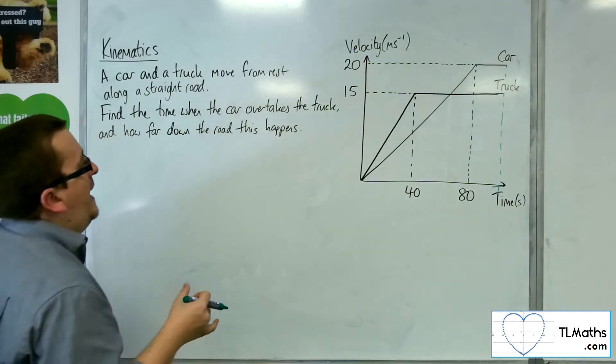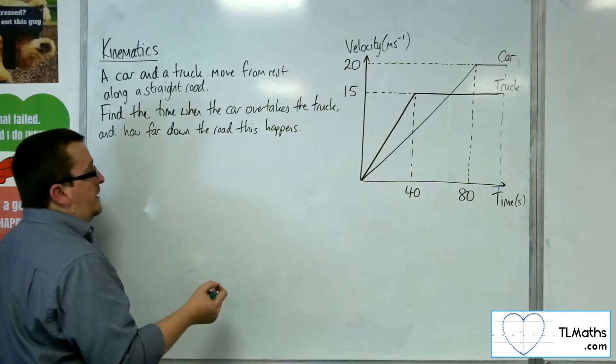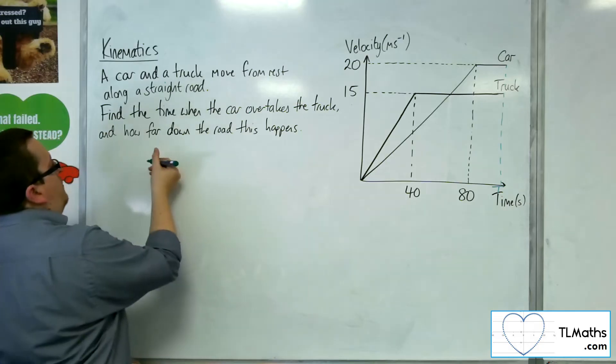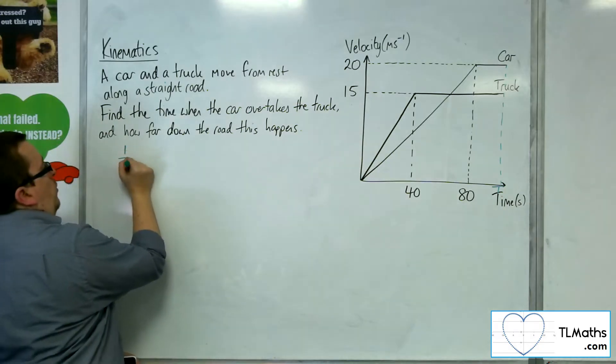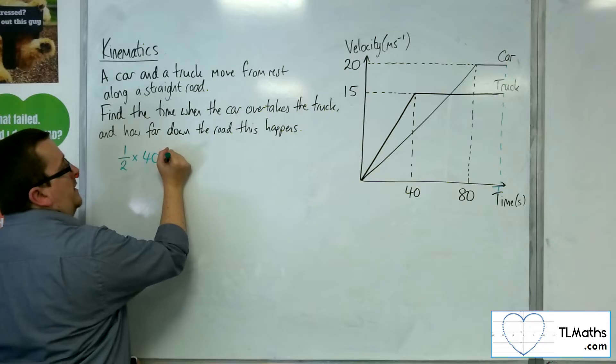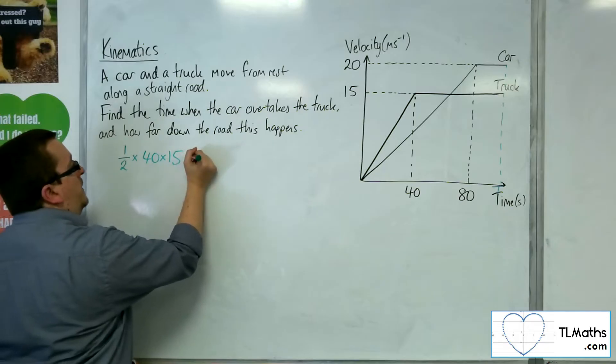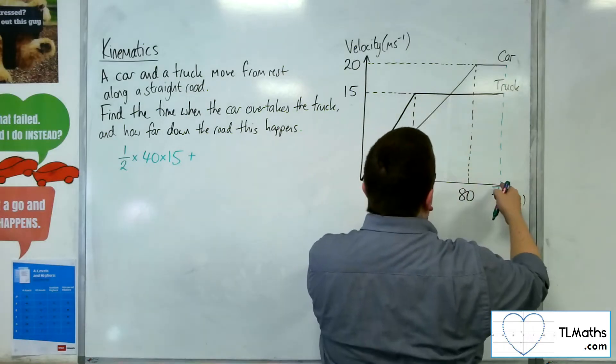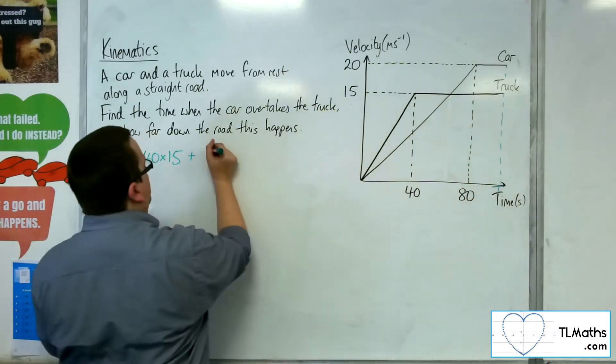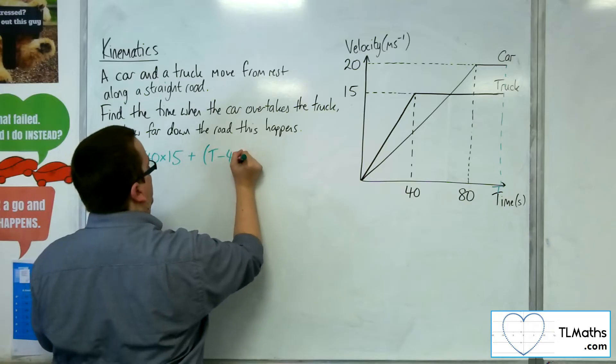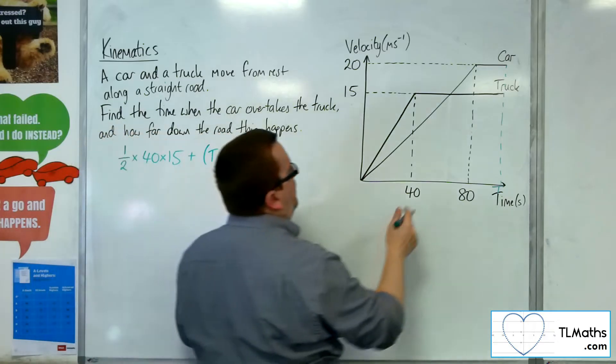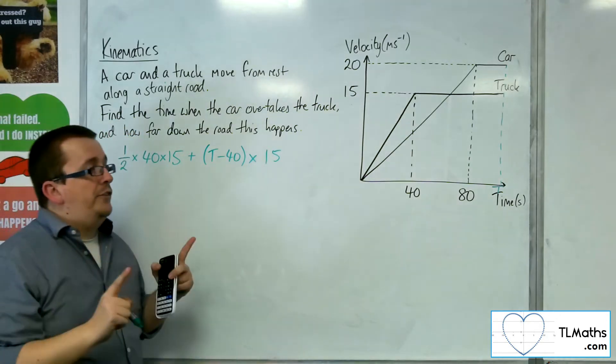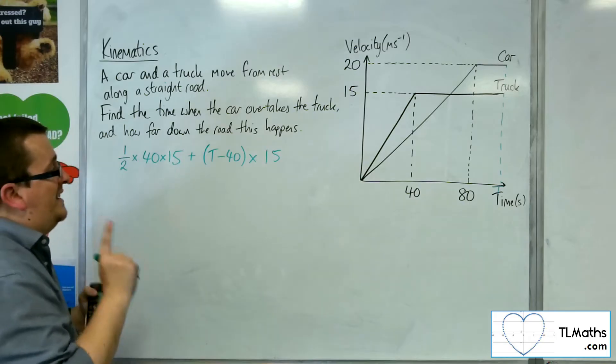So if I find the area for the truck, which is the area of this triangle plus the area of the rectangle. The area of the triangle is 1/2 times the base, 40, times the height, 15, plus the area of this rectangle here. So I've got T take away 40, times by the height, so 15. So that is the area, the distance the truck travels after T seconds.